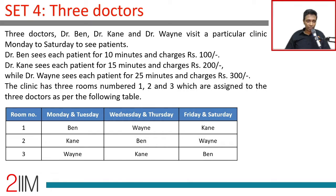One of the three doctors — Dr. Ben, Dr. Cain, and Dr. Wayne — visits a particular clinic Monday to Saturday to see patients. Ben sees each patient for 10 minutes and charges 100 rupees. Cain sees each patient for 15 minutes and charges 200, while Dr. Wayne sees each patient for 25 minutes and charges 300 rupees.